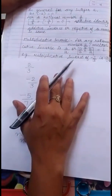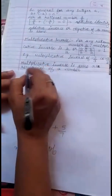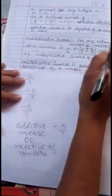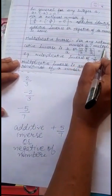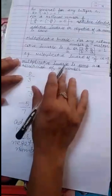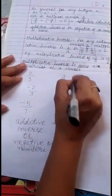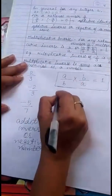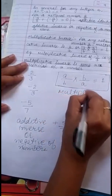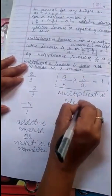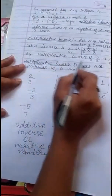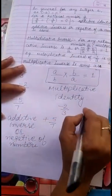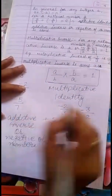Now, the multiplicative inverse. Multiplicative inverse is the same as the reciprocal of a number. For any rational number a upon b, the multiplicative inverse is b upon a — or in other words, a upon b multiplied by b upon a is equal to 1. This is called multiplicative identity; 1 is also called the multiplicative identity. For example, the multiplicative inverse of minus 2 by 3 is minus 3 by 2.